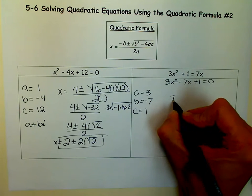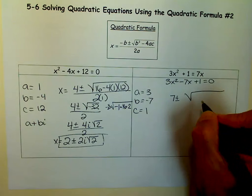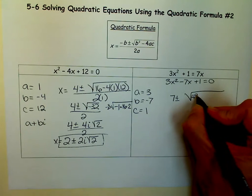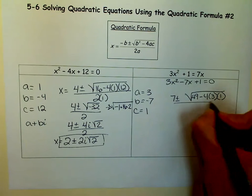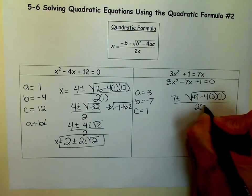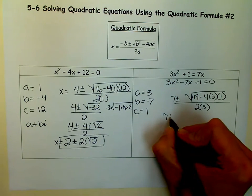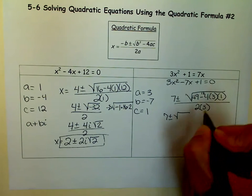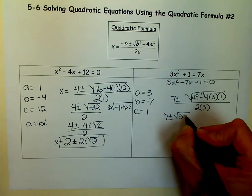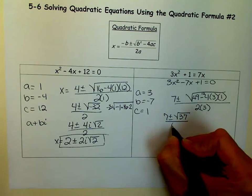We're going to say the opposite of b plus or minus the square root of b squared minus 4 times a times c, all over 2 times a. So we get 7 plus or minus—4 times 3 is 12—so I get 49 minus 12, which is 37, all over 6.